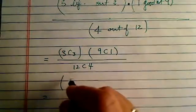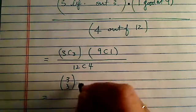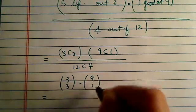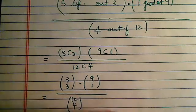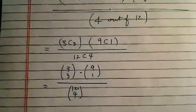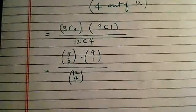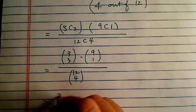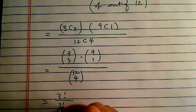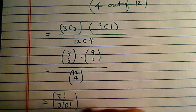Let's write it in a combination form. So 3, 3 times 9, 1, and 12, 4. So this equals 3 factorial over 3 factorial, 0 factorial. That's the 3, 3.